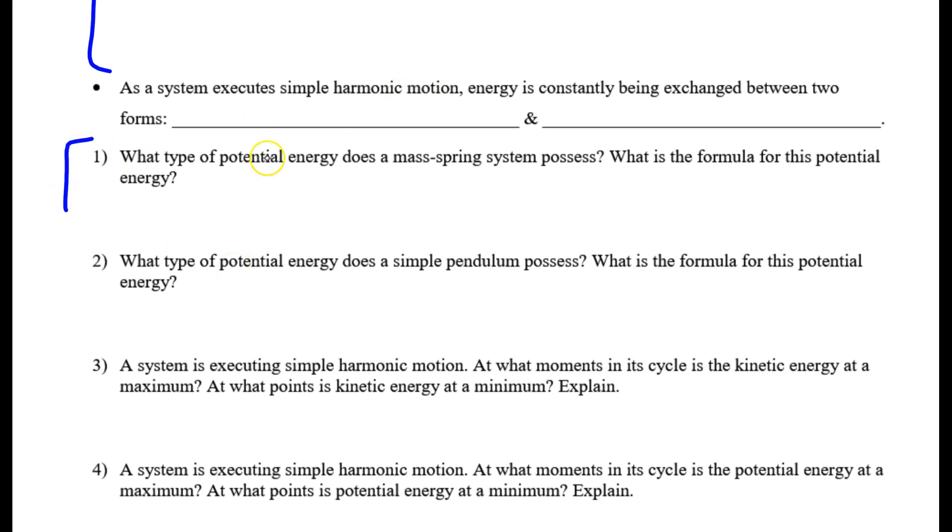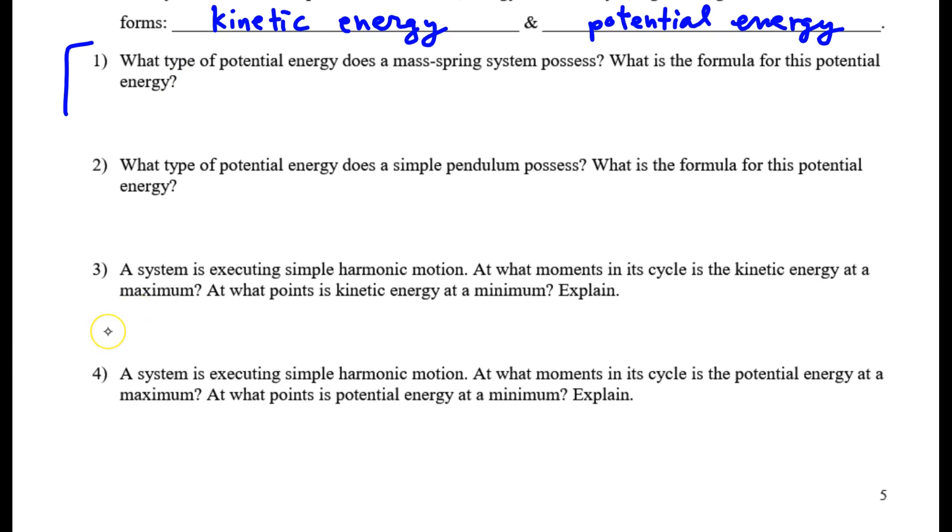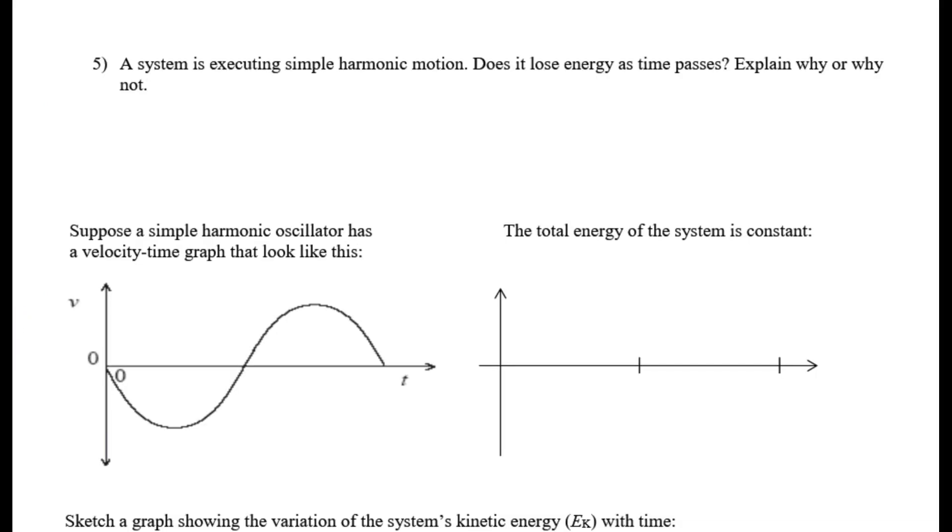And then the one thing I want to do before we move on to this practice, which is pretty straightforward: As a system executes simple harmonic motion, energy is constantly exchanged between two forms. There's kinetic energy when the object is moving fast and potential energy when the object briefly stops at the edge of its path. So what I want you to think about in the problems or questions below is what forms of energy are we dealing with? Remember, we've learned about electric potential energy. There are things like elastic potential energy, gravitational potential energy. So consider those types. Answer 1 through 4 on this page and then answer 5 as well. From there, we'll move on to this work in class.